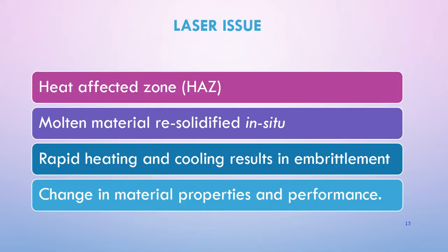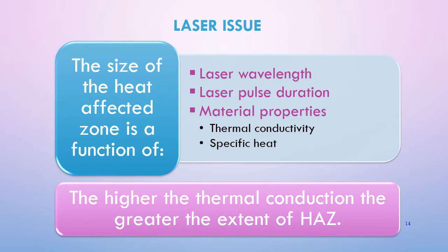However, laser has some issues. Because it involves a rise in temperature, there will be a heat affected zone (HAZ), and molten metal that resolidifies in situ — meaning after the process, there will be molten metal left inside that solidifies. Additionally, the rapid heating and cooling can cause brittle properties in the material, which can change material properties and performance. The heat affected zone is usually related to laser wavelength, laser pulse duration, and material properties such as thermal conductivity and specific heat.